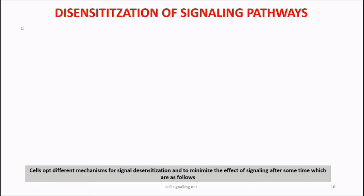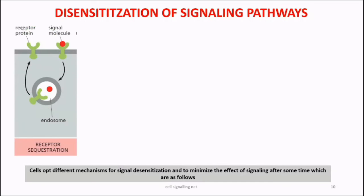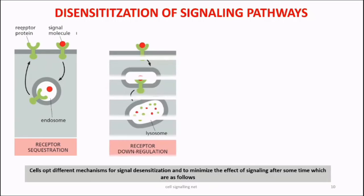Regarding desensitization of signaling pathways: when a signal arrives, a cell responds by altering its physiology at proteomic and transcriptomic levels, but a cell signal cannot persist indefinitely. The cell uses different mechanisms for signal desensitization. First, when a ligand binds with the receptor, the ligand-receptor complex is internalized by endocytosis to form an endosome. Within the endosome, the ligand detaches from the receptor; the ligand is destroyed and the receptor is translocated back to the cell surface. Second, the endosome can fuse with a lysosome, where both ligand and receptor are destroyed.